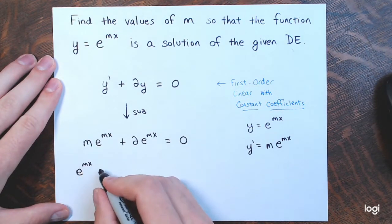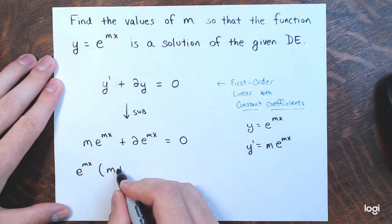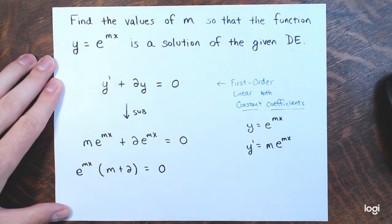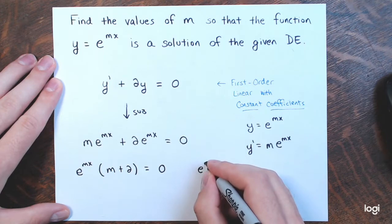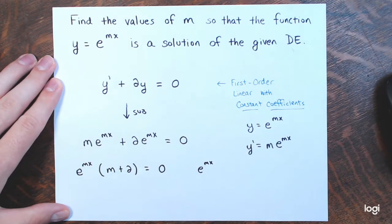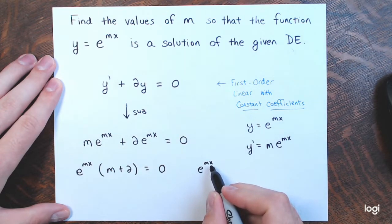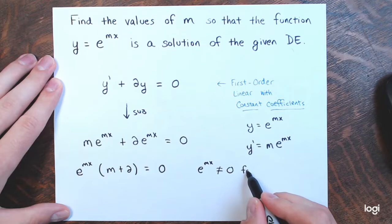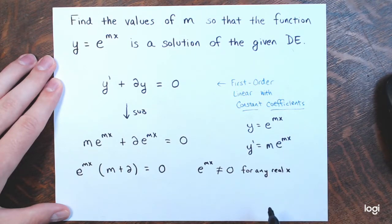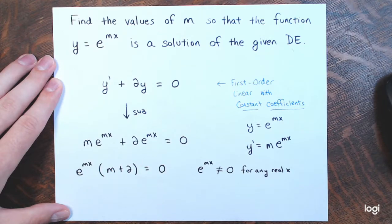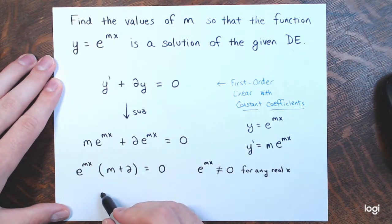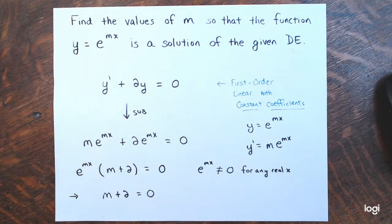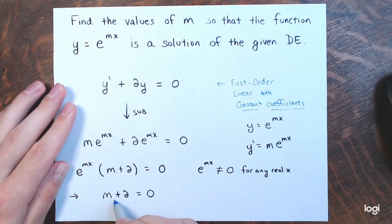You may notice that e to the mx is common to these two terms, so factor it out. After factoring out e to the mx, you're left with the quantity m plus 2 equals 0. Since e to the mx will never equal 0 for any real x, you can divide both sides by it, and we end up with m plus 2 equals 0 — a polynomial equation in m.